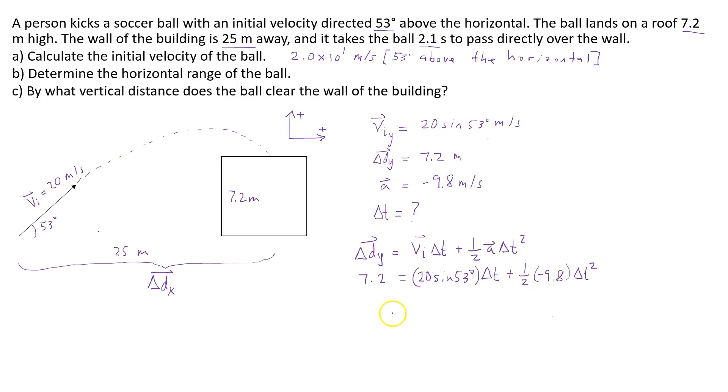So what I'm going to have is, so this becomes negative 4.9, so when I move it over it's going to become positive. So 4.9, and the delta t I'm just going to write as t. So 4.9 t squared. This is approximately 16. So it's going to be negative when I move it over. So negative 16 t plus 7.2.